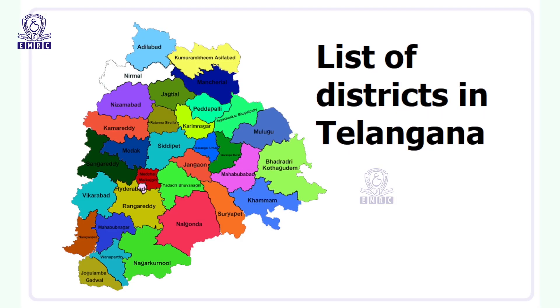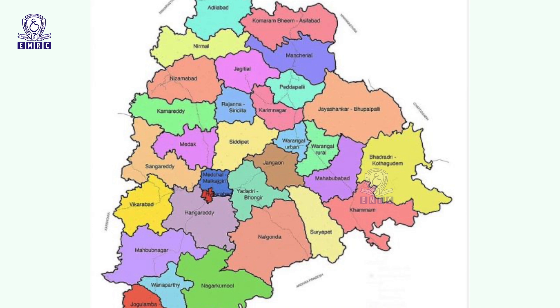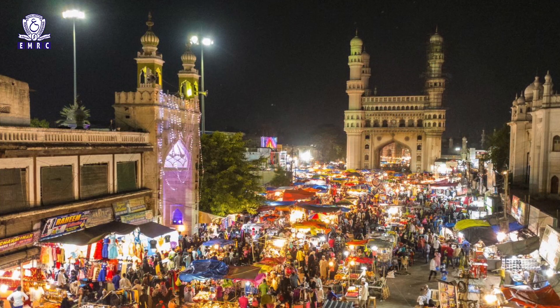New districts in Telangana state were created according to the Districts Reorganization Act 1977. The reorganization of districts was done based on population, area and number of families. For administrative convenience and providing welfare and developmental programs effectively, new districts were created on 11th October 2016 on the day of Vijayadashami, increasing the total number of districts in Telangana to 23.